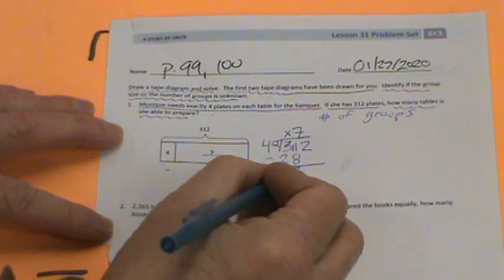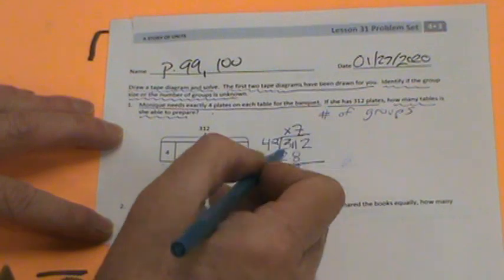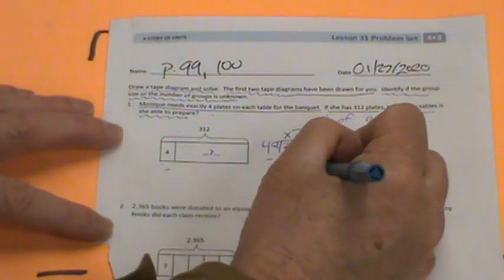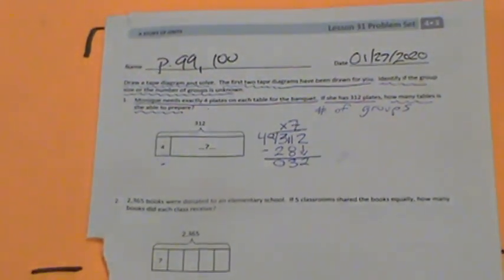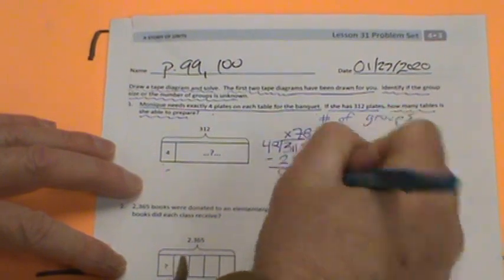Once again, we're with the 3. The 4 cannot go into that 3. So 4 times 70 is 280. Now we have left with 30. And we bring down the 2. We're left with 32. 4 times 8 is 32. We're at 0, 0.